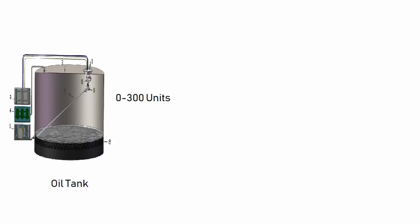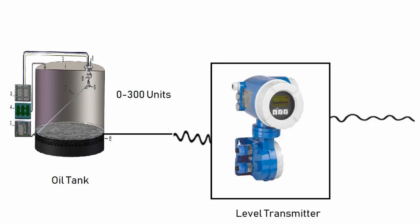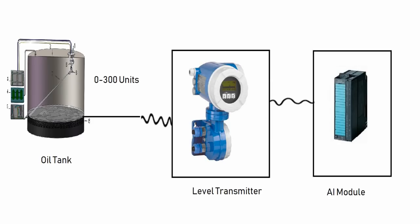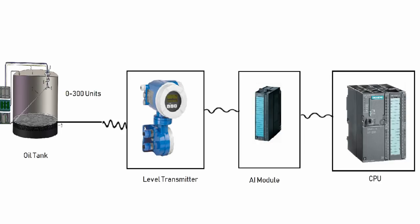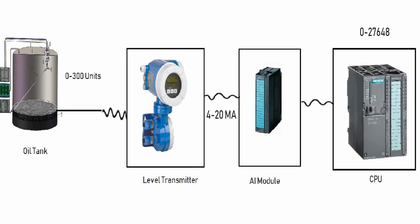We got an answer: the level range is 0 to 300 units. To measure that we put an instrument — a level transmitter — there to measure how much level is inside the tank. Then we need an AI card. For a digital signal we need a DI card, and for an analog signal coming from the field we need an AI module, and after that the CPU. That's how the signal processes from the oil tank to the CPU of the PLC.